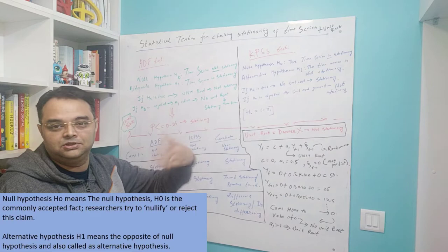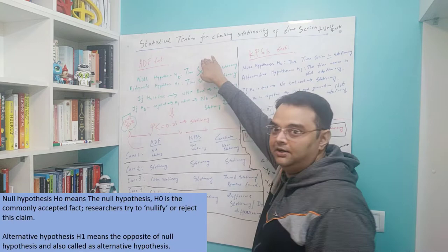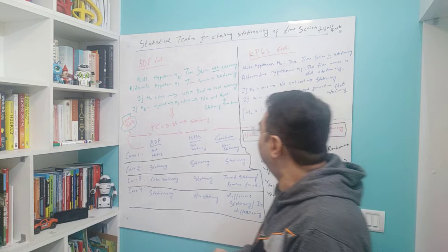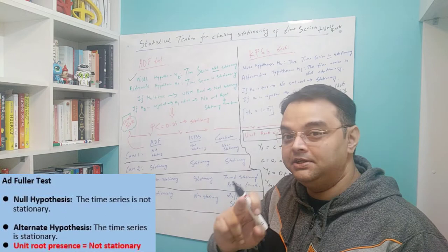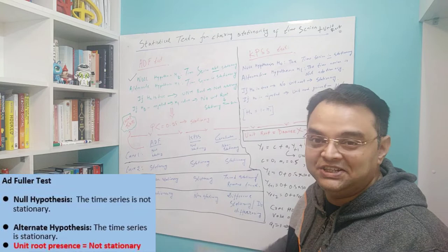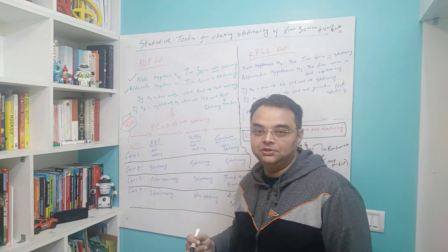Both tests work on the concept of null and alternate hypothesis, which you know from your high school mathematics. The ADF test is the Augmented Dickey-Fuller test, and the null hypothesis H0 assumes that the time series is not stationary. So remember: in the ADF test, H0 is that the time series is not stationary, and therefore the alternate hypothesis is that the time series is stationary.